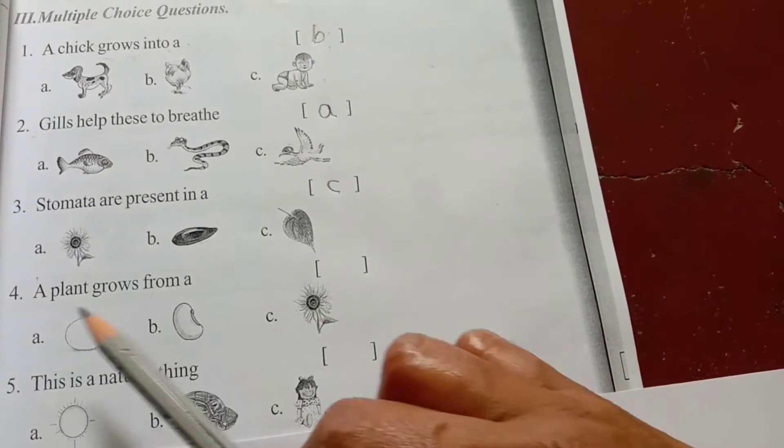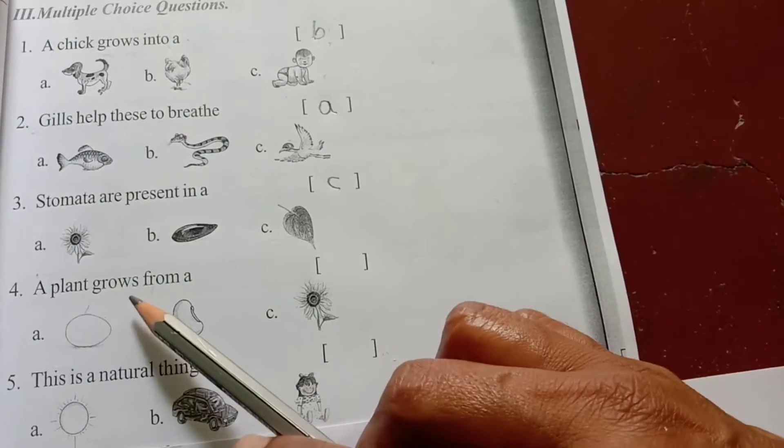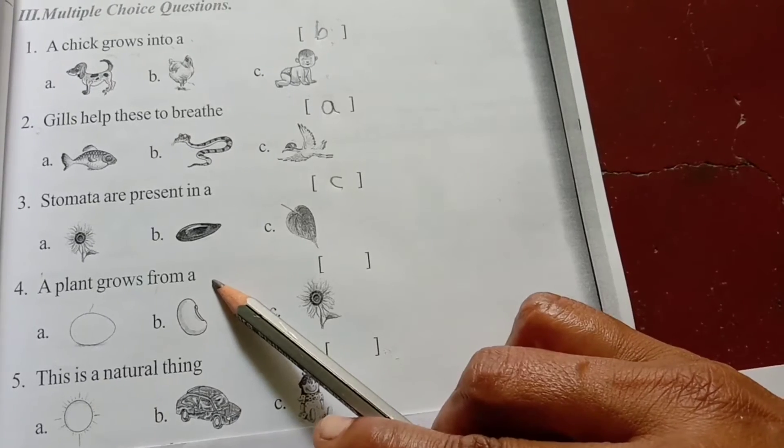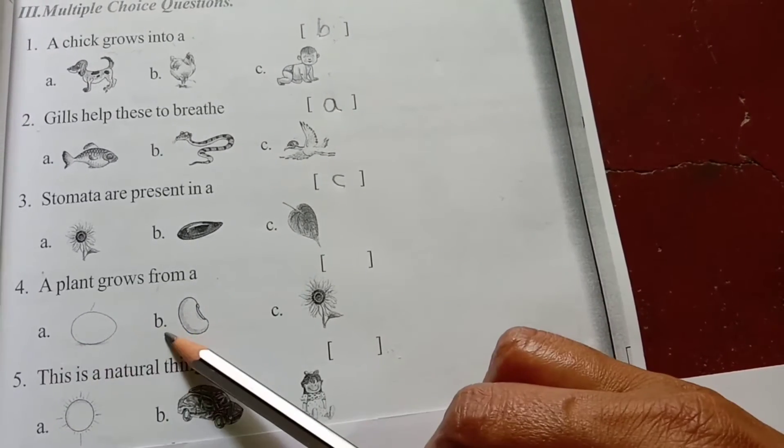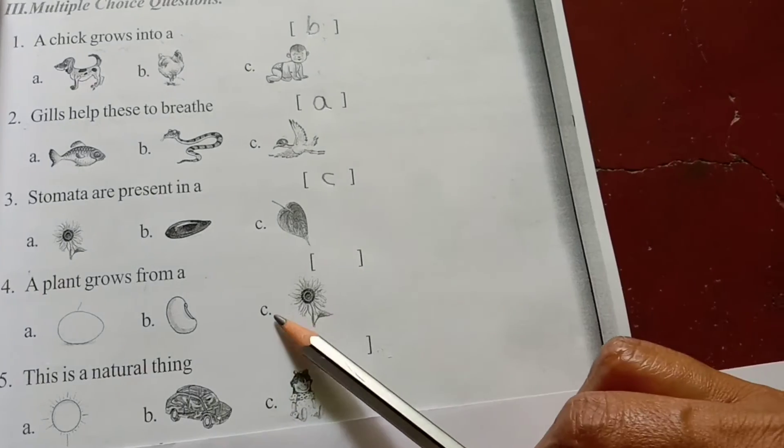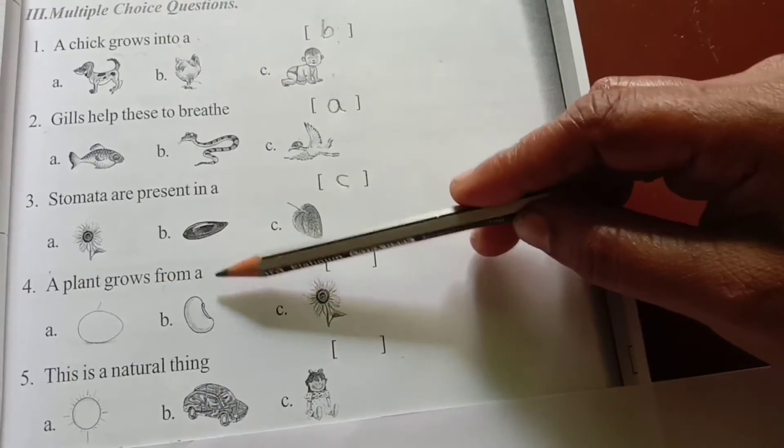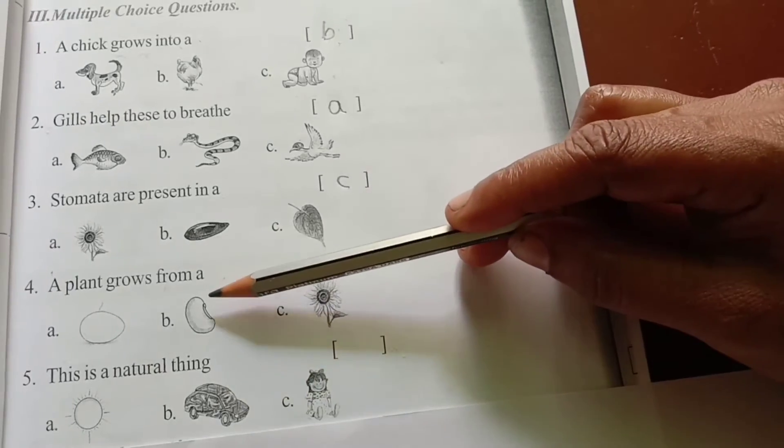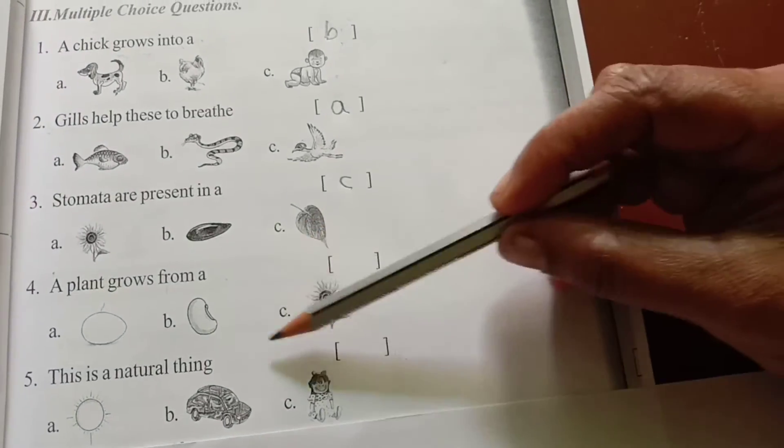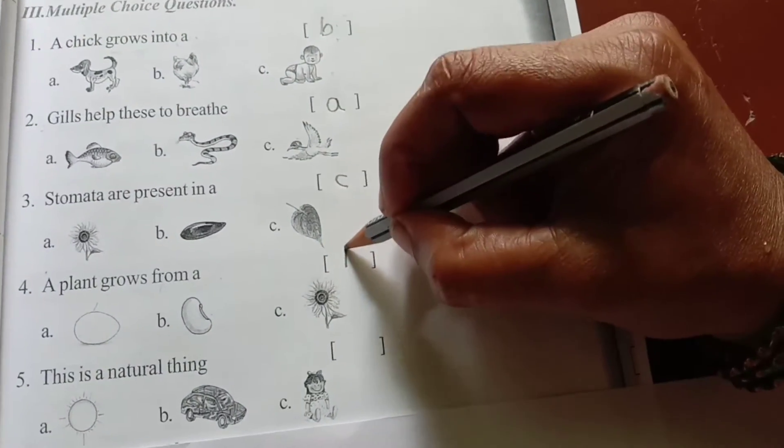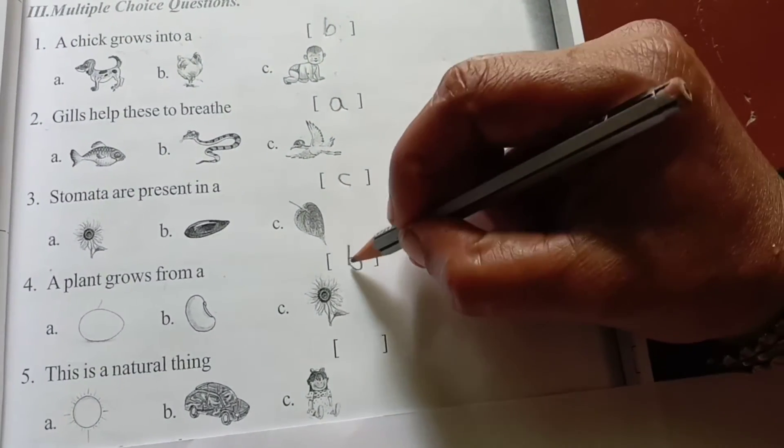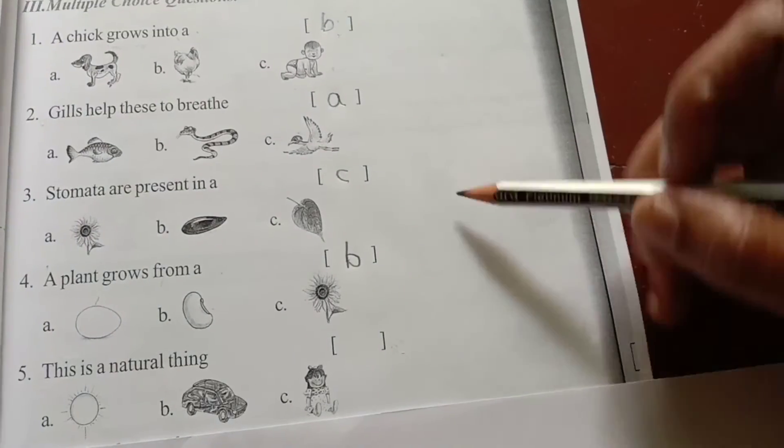Next. Fourth one. A plant grows from a... First one, egg. B, seed. C, flower. A plant grows from a seed in the ala. B.